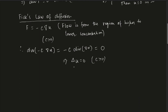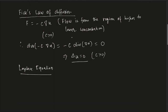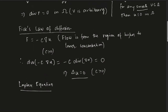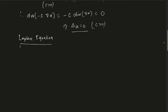So from Fick's law we derived the Laplace equation. Similarly, Fourier's law of heat conduction gives the same result — in that case u represents temperature. And for Ohm's law of electricity conduction, u would be the electrostatic potential. In the next set of lectures, we will talk about how to actually work with the Laplace equation. Thank you very much.